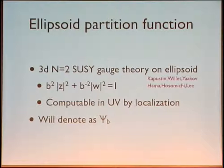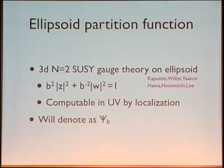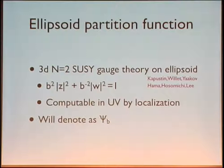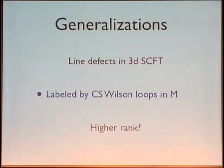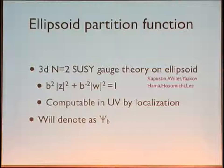A motivation behind this was to understand the connection with Liouville theory. The usual connection between Liouville theory mapping class group operators and the partition function on S3 always gives Liouville theory with central charge c=25 because b=1. So this is an attempt to get a more general b, a more general central charge on the Liouville theory side, which corresponds to a more general ℏ in Chern-Simons theory. The relation between ℏ and b² was discussed in Nekrasov's talk: ℏ ≈ 2πib².